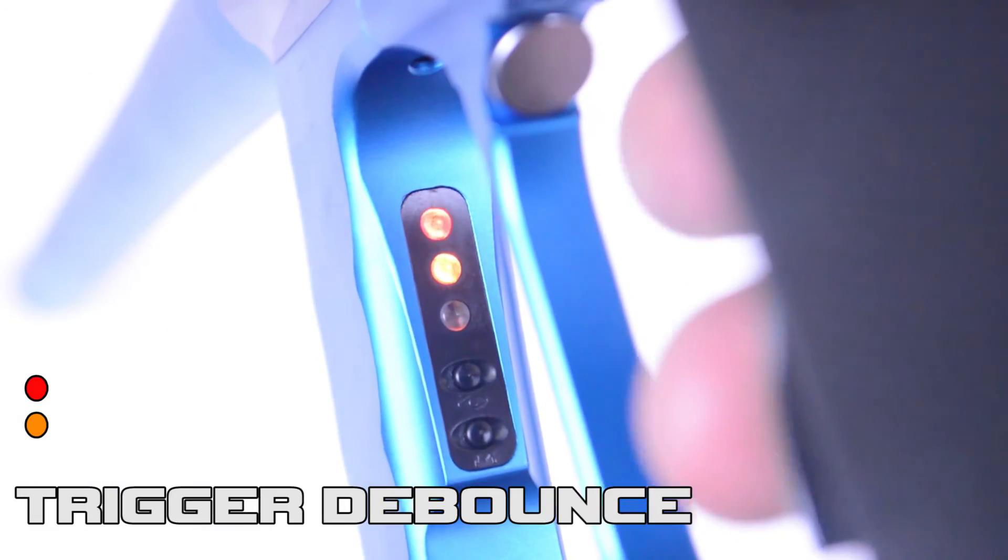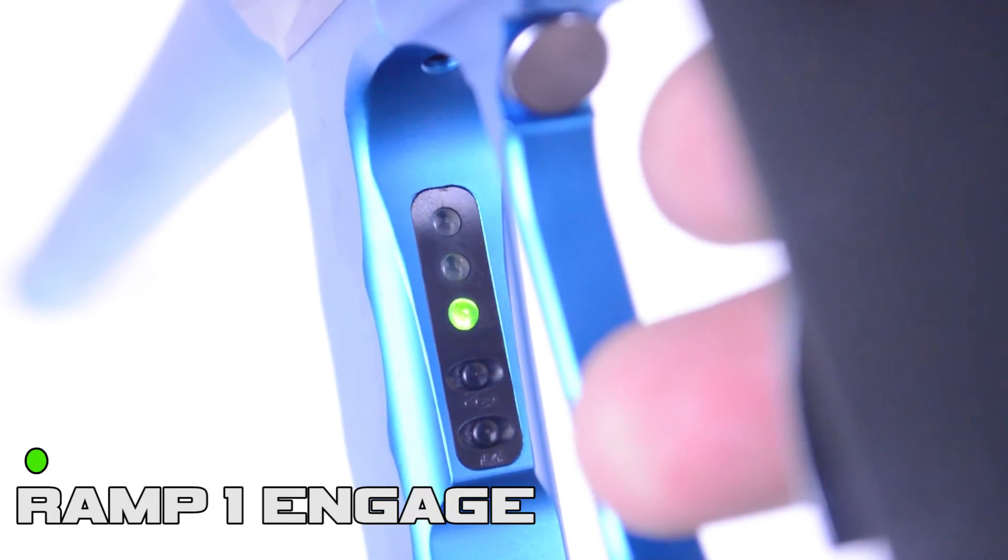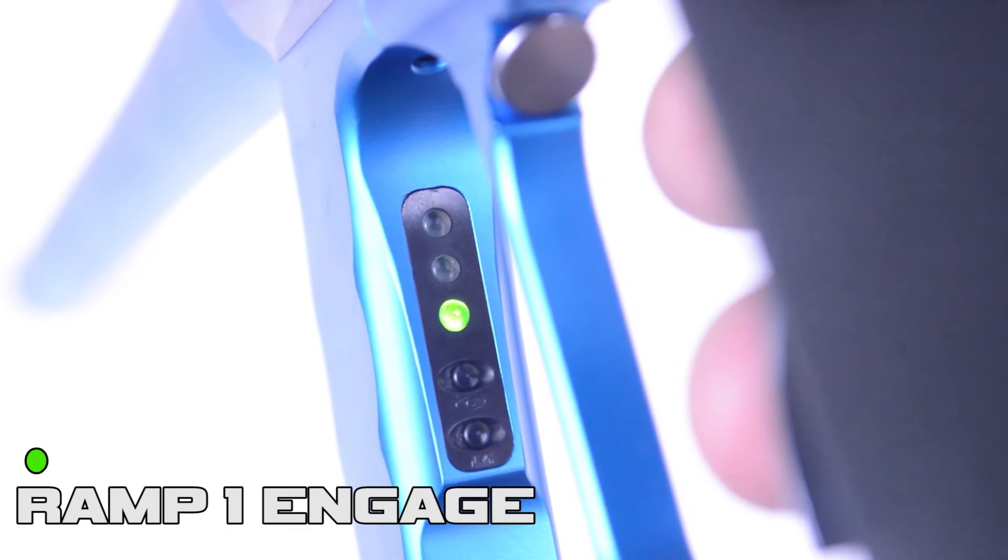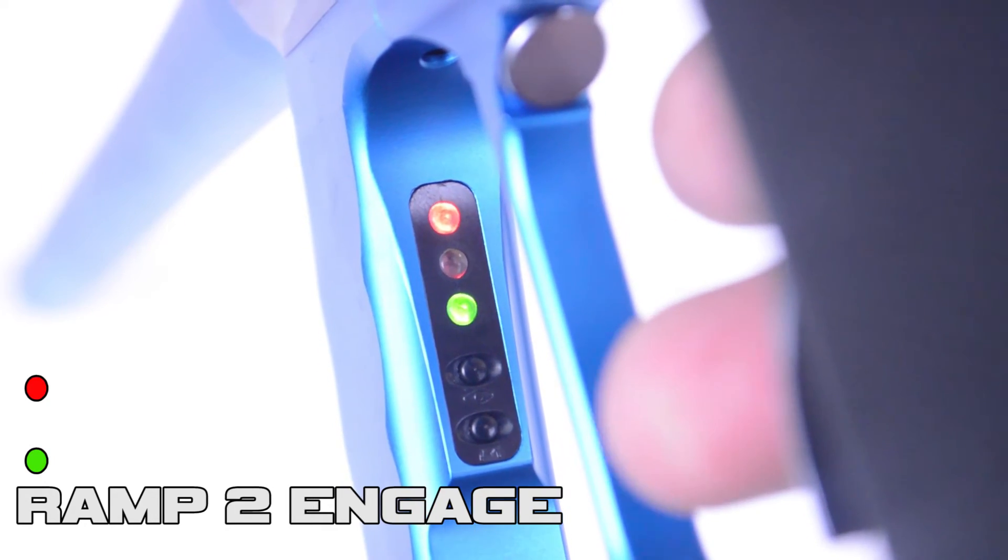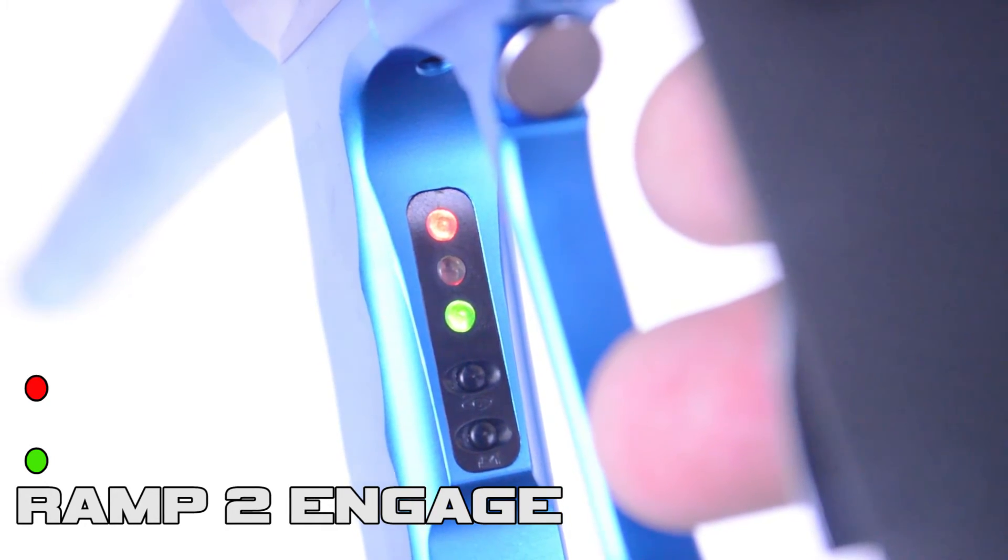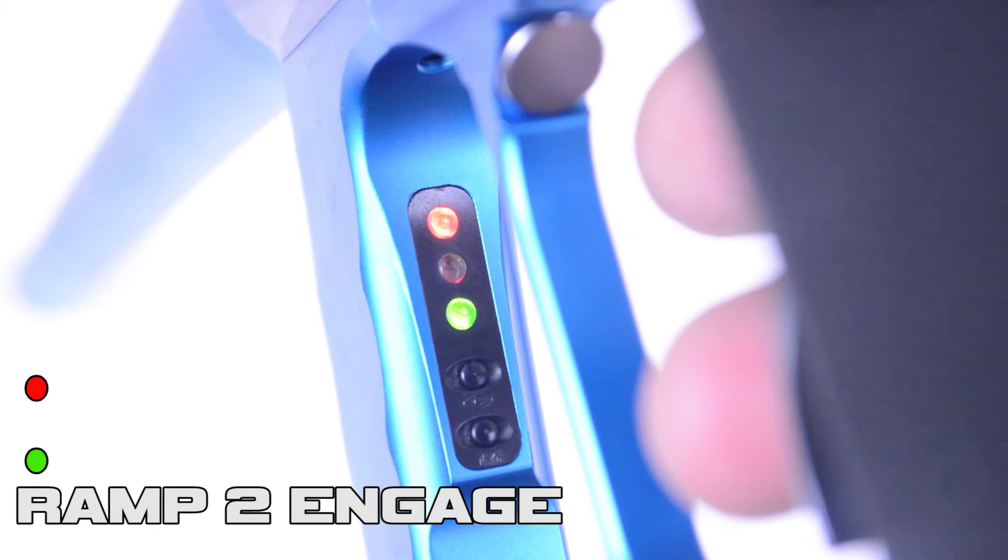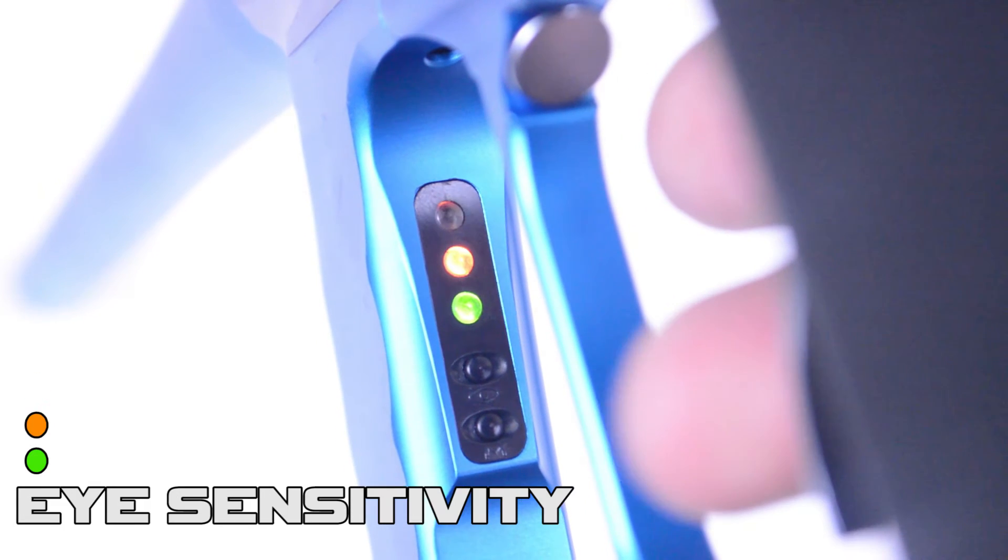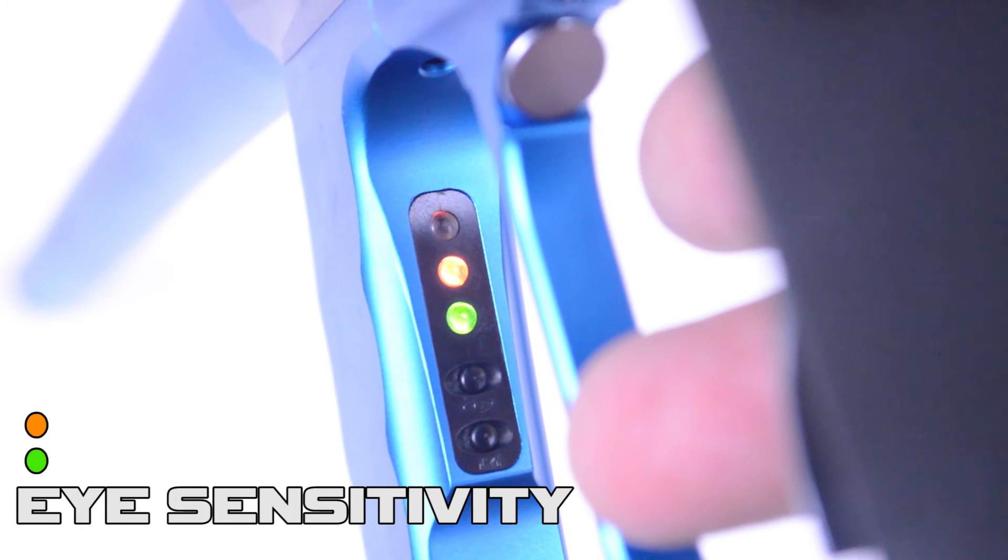The orange and red LEDs let you know you'll be adjusting trigger debounce. The green LED is for pulls per second on ramp one. The red and green LED is for pulls per second adjustment on ramp two. And the orange and green LED lights is for the ball position accuracy or your eye sensitivity settings.